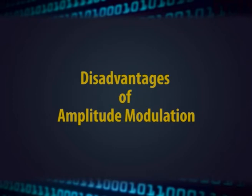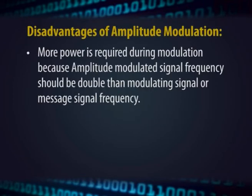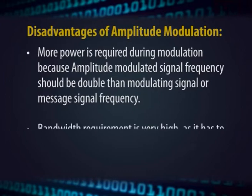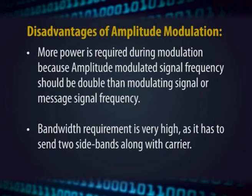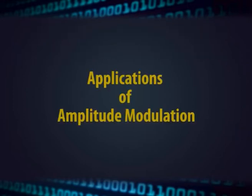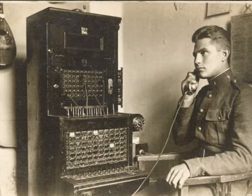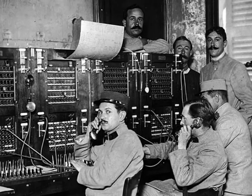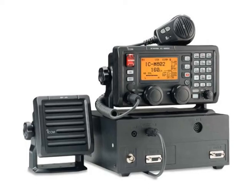Disadvantages of amplitude modulation: more power is required during modulation because the AM signal frequency should be double that of the modulating signal frequency. Bandwidth requirement is very high as it has to send two sidebands along with the carrier. It is also difficult to tune in the absence of the carrier. Applications include carrying message signals in early telephone lines, use in navy and aviation communication since AM signals travel longer distances, and widespread use in amateur radio.